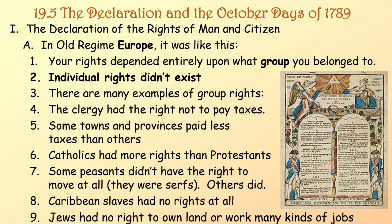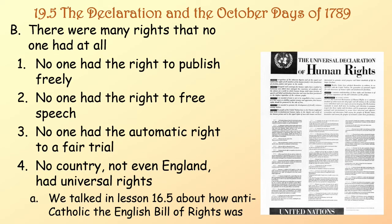The Declaration of the Rights of Man and Citizen. In old-regime Europe, your rights depended entirely upon what group you belonged to. Individual rights didn't exist. In France, for example, the clergy had the right not to pay taxes. Some towns and provinces paid less taxes than others. Catholics had more rights than Protestants. Some peasants couldn't move at all — they were still serfs. Caribbean slaves had no rights at all. Jews had no right to own land or work many kinds of jobs. No one had the right to publish freely, to free speech, or to an automatic fair trial. Not even England had universal rights.